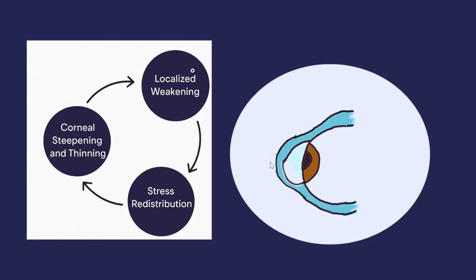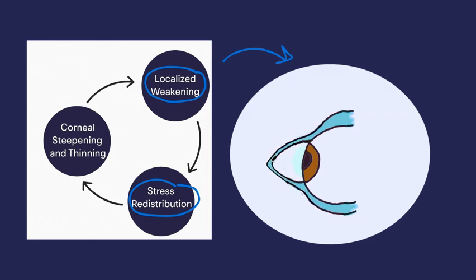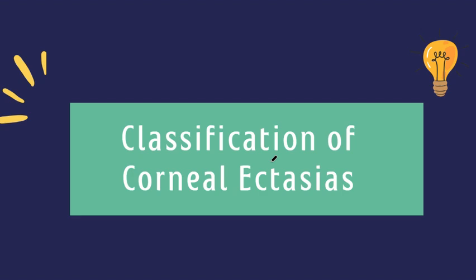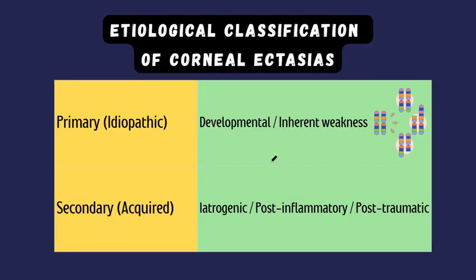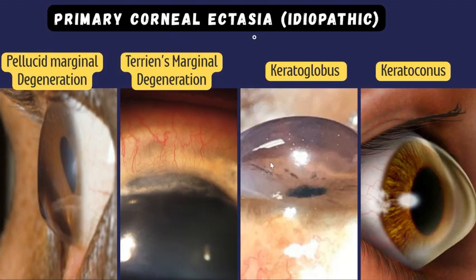It can start from a localized area of weakness, followed by stress redistribution leading to corneal steepening and thinning — that is corneal ectasia. Now let's talk about the classification of corneal ectasia. Etiologically, we divide ectasia into primary and secondary. In primary corneal ectasia, there is a developmental problem leading to an inherent weakness in corneal collagen structure. Secondary factors include iatrogenic causes such as post-LASIK, post-inflammatory, post-corneal ulcer, or post-traumatic reasons.